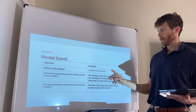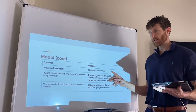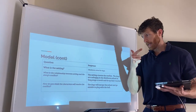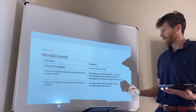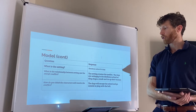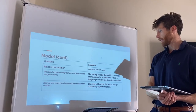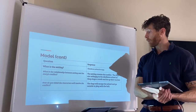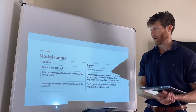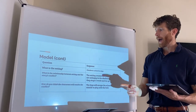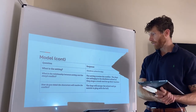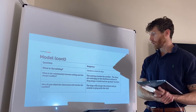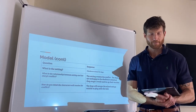Let's put those ideas into the graphic organizer. Setting: obedience school for dogs. The relationship between setting and conflict: the setting creates the conflict — the dogs are unhappy in the obedience school, so they stage a revolt and tie up their teacher. How will the characters resolve the conflict? The dogs will escape the school and go outside to play with the ball.